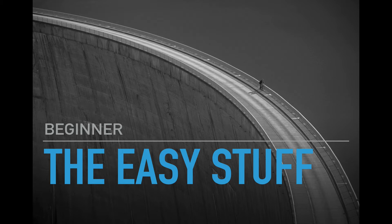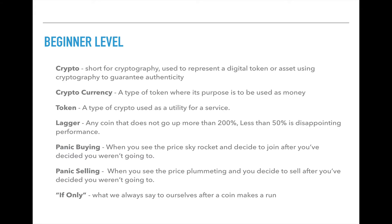We're going to start off with the beginner stuff and make it really easy. Most of these you should have already heard of, but just in case you aren't, we're going to cover it very quickly. So to start: crypto. Crypto is commonly used as shorthand for talking about Bitcoin and different altcoins in general. They can be cryptocurrencies, tokens, or other utilities, but usually it's just talking about the space.